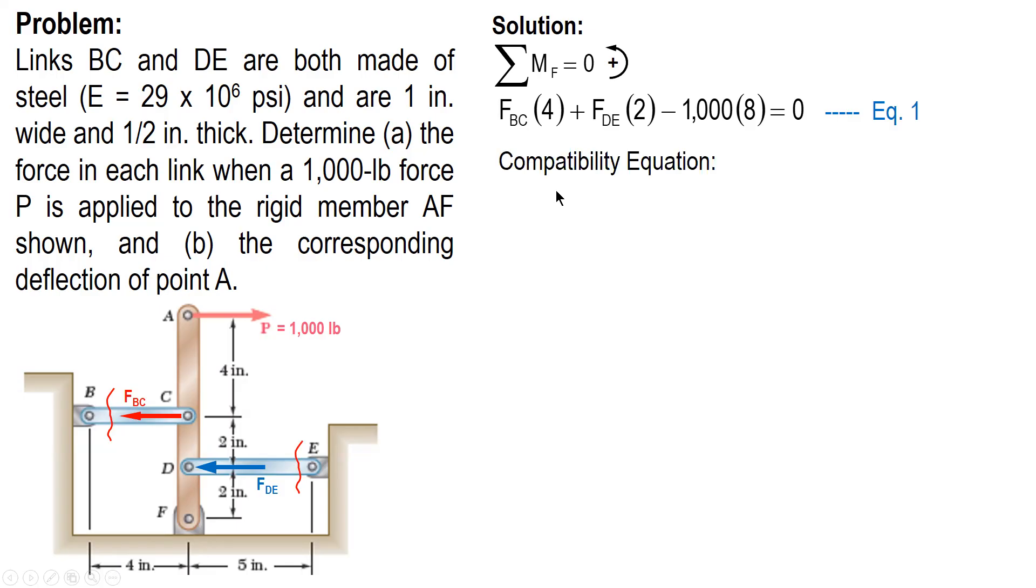Let's have the compatibility equation. Where do we get this one? From the deformed shape of member AEB. When we pull at the pin with 1000 pounds, initially vertical is AF. But since BC and DA are deformable, they will deform. Therefore, AF will lean towards the right. The final position of AF will be this one.